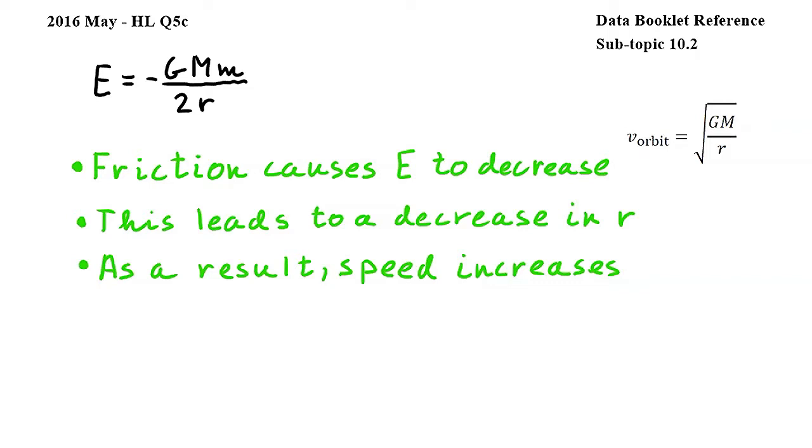Where V orbit is orbital speed, capital G is the gravitational constant, capital M is the mass of the planet, and R is the orbital radius. In this equation, G and M remain constant, while R, as we concluded, decreases.